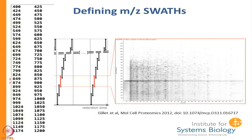This is a depiction of the actual swaths used — you can see it goes from 400 to 425, then 424 to 450, so there is a little bit of overlap in each case. Basically there are 32 identical windows and then you go back again.